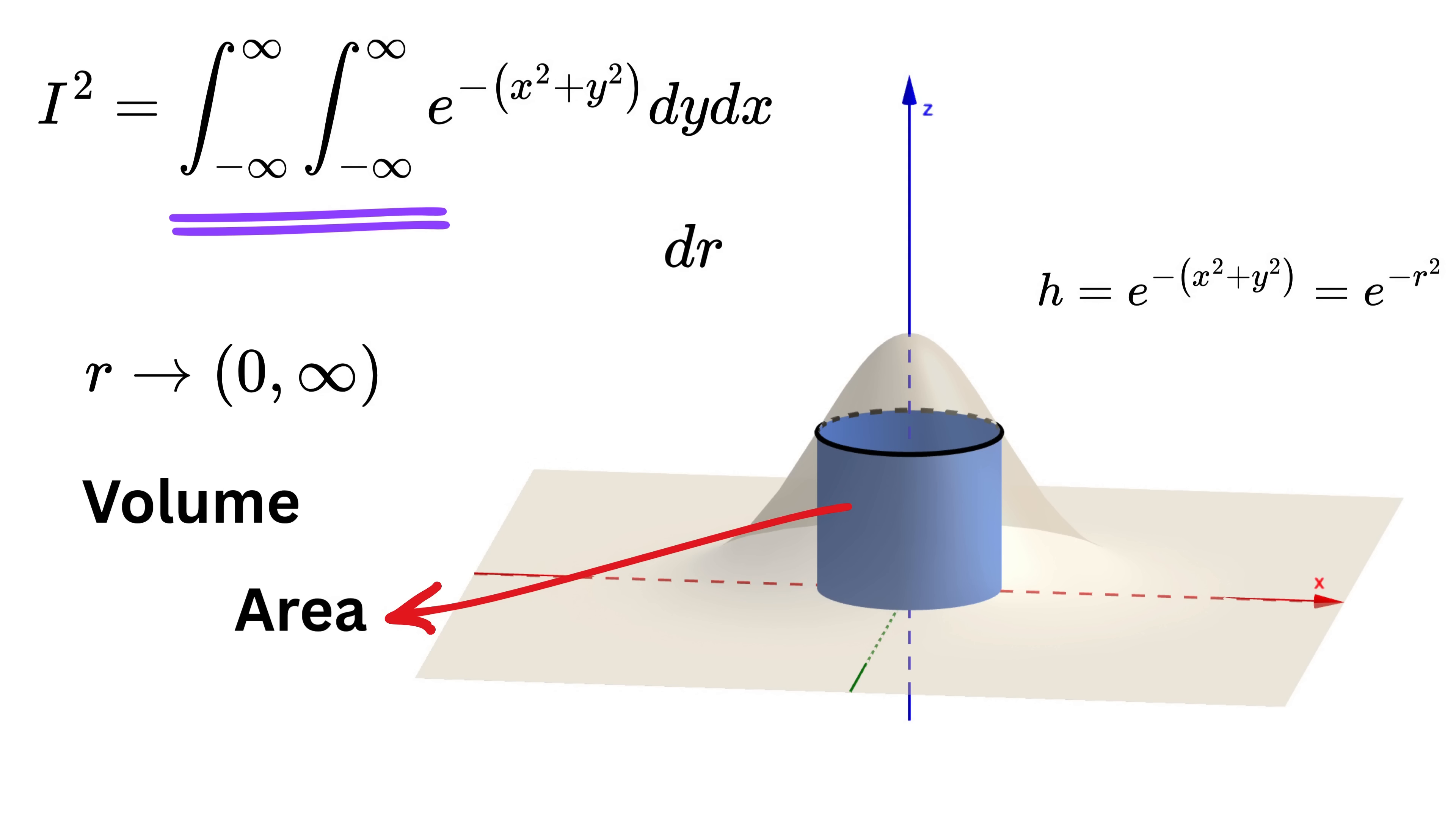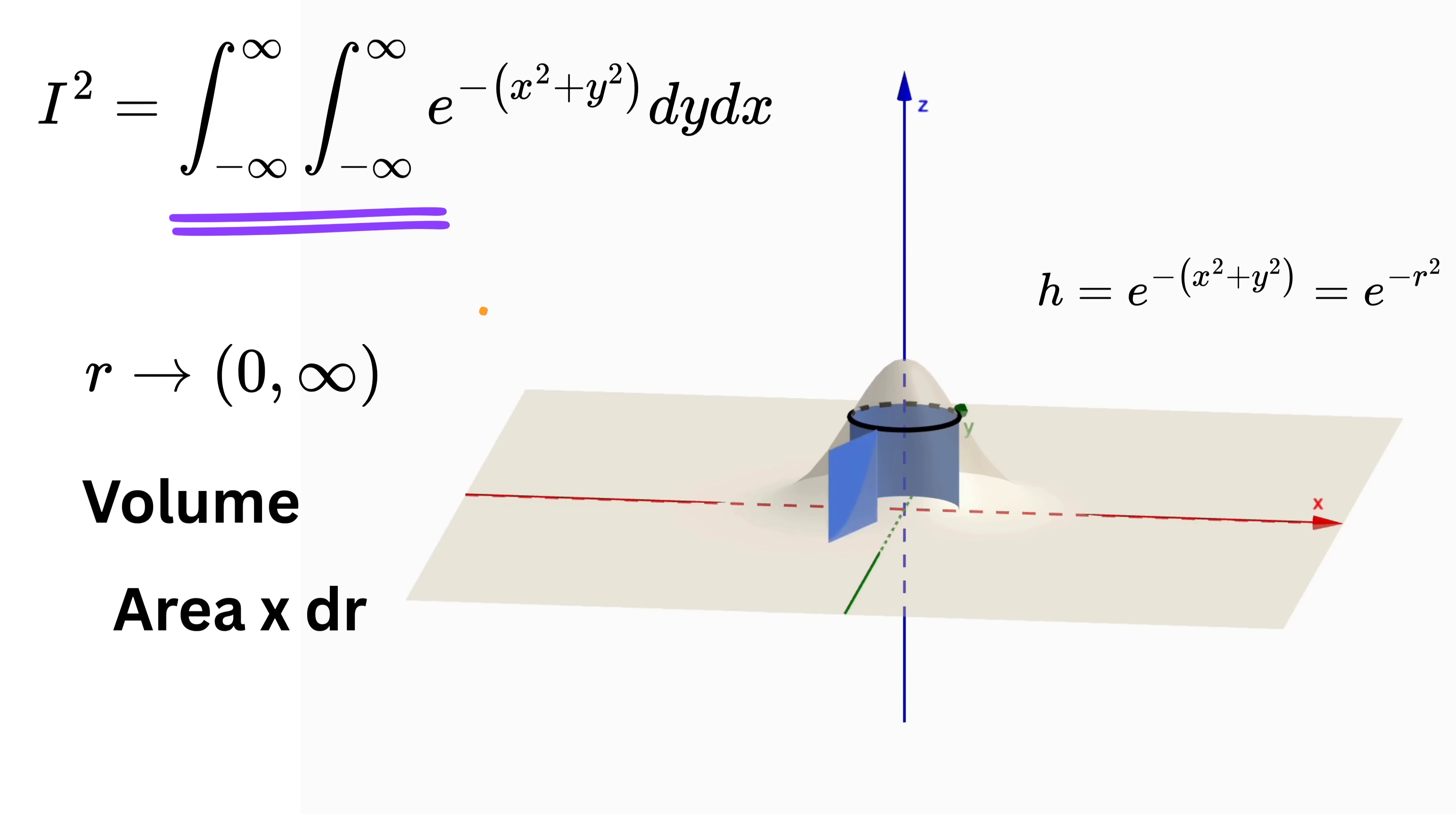So what will be its volume? It will be the area of this cylindrical shell times its thickness. We can imagine it as a rolled paper. If you cut the paper like this, it will open up to make a rectangle whose length will be equal to two times pi times r, that is the circumference of the circular ring, and the height will be e raised to minus r squared. So the area of that rectangle is just two times pi times r times e raised to minus r squared. And when we multiply that by the small thickness dr, we get the volume of that thin cylindrical shell.